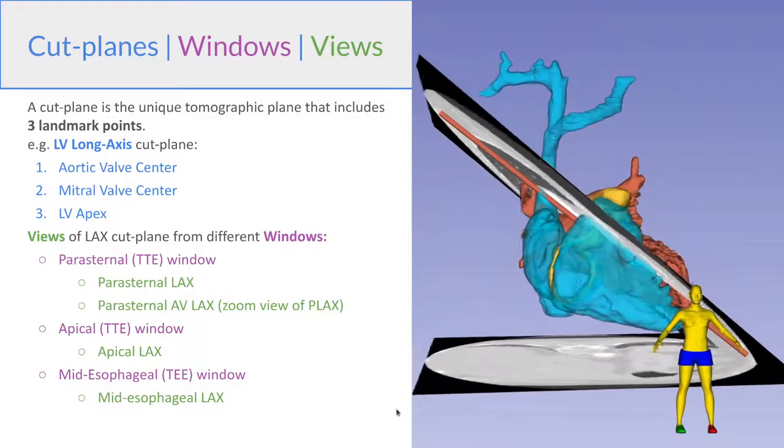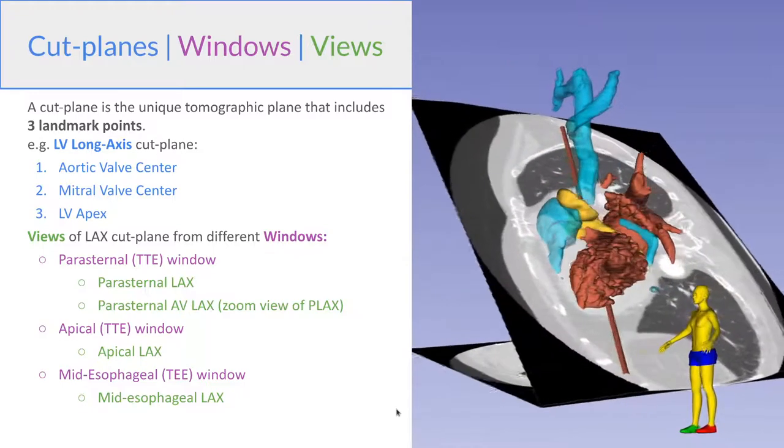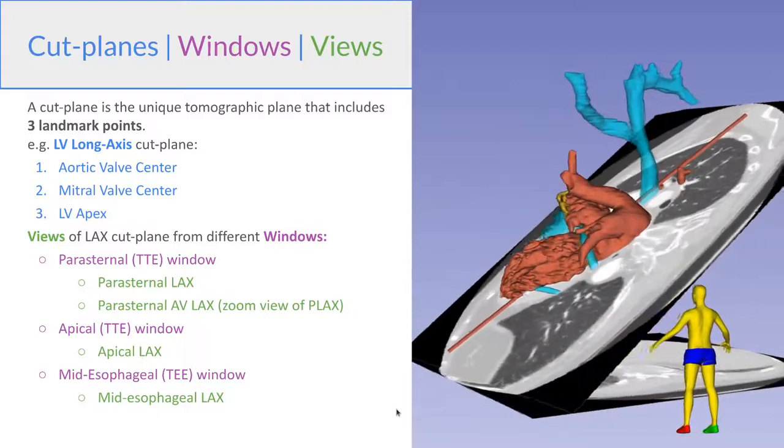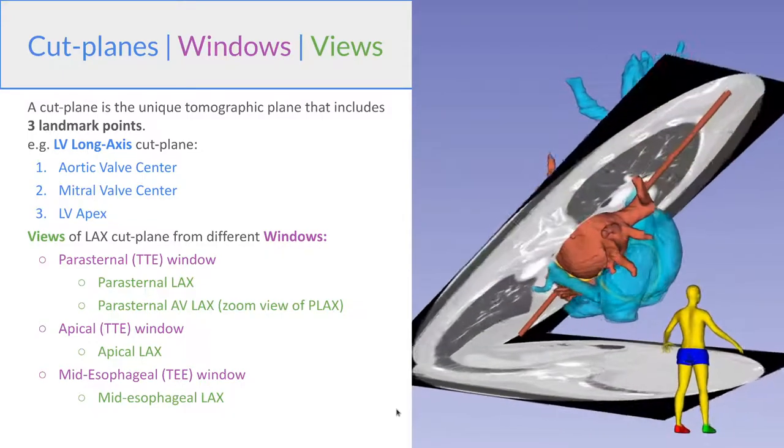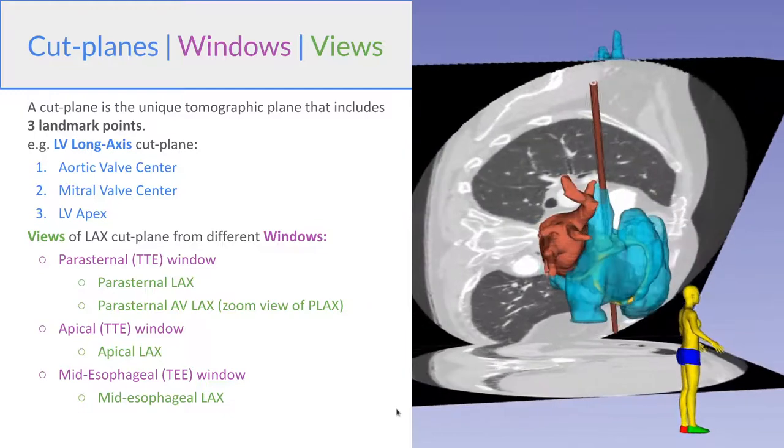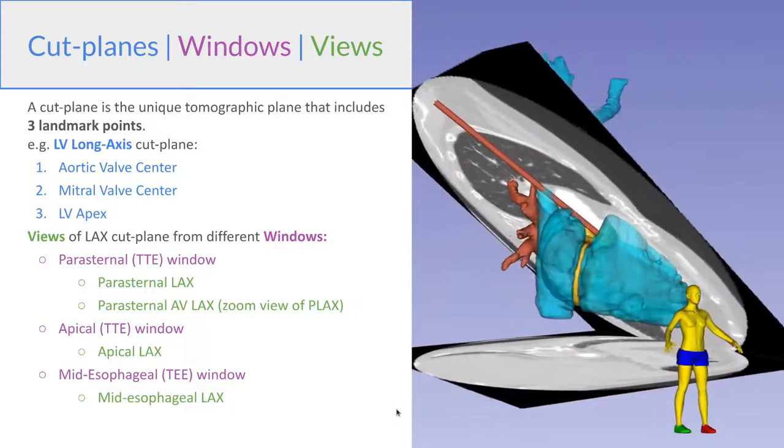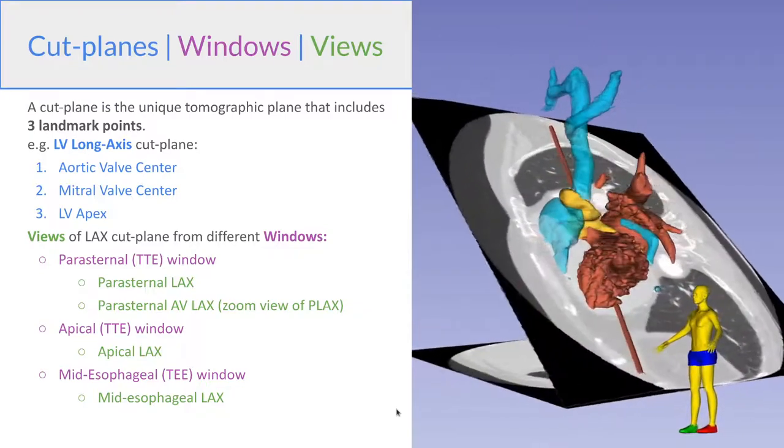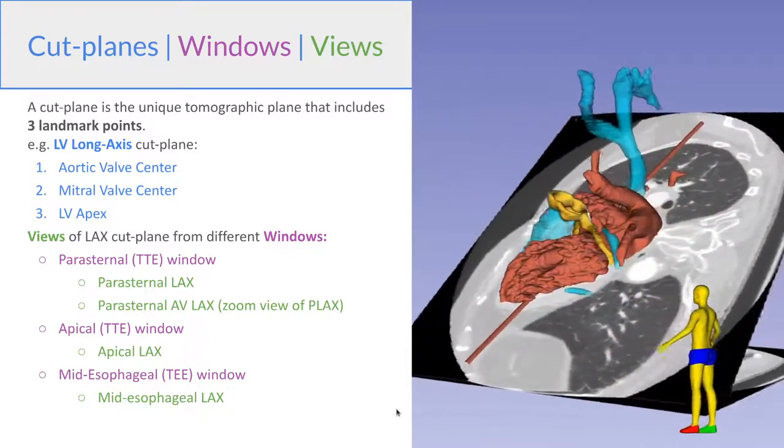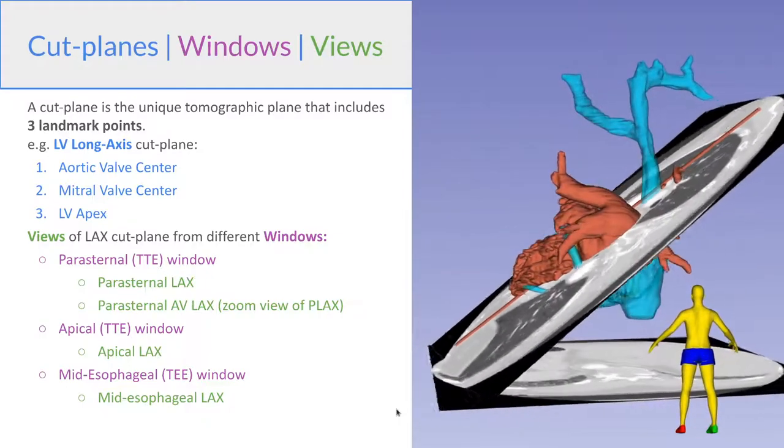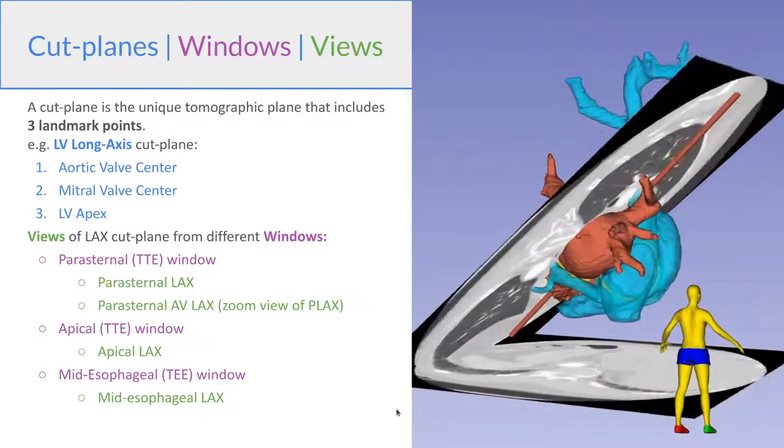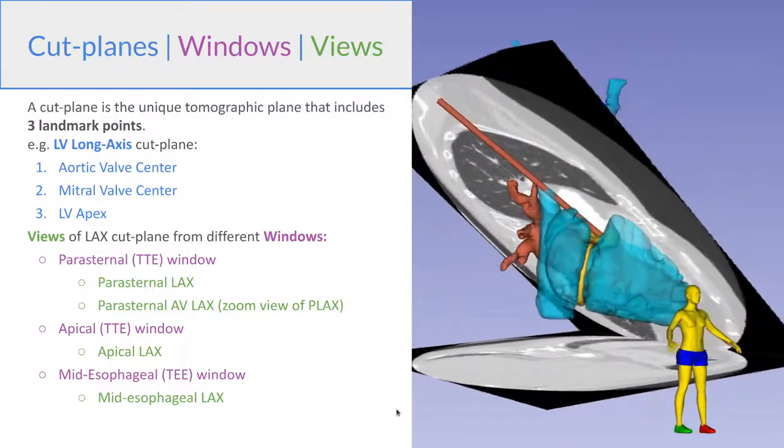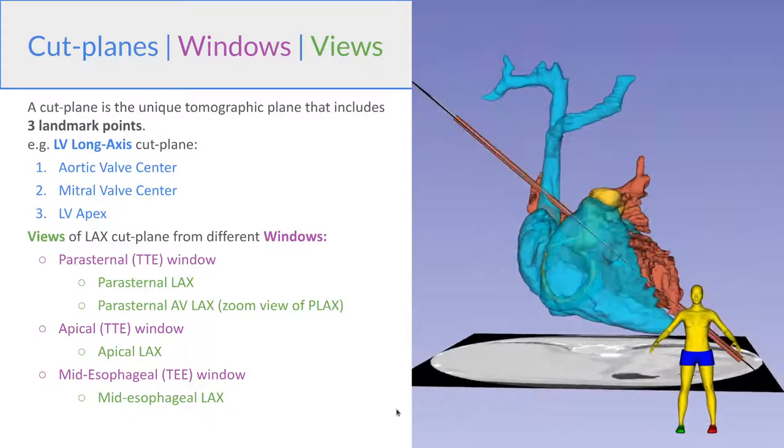So next we're going to look at cut planes, windows, and views. And the distinction here is pretty important. So cut planes are tomographic slices through the image. And these can be defined typically by three landmark points. For example, for the long axis view cut plane that is shown here, it can be defined by the center of the aortic valve, the center of the mitral valve, and the LV apex. And for a given cut plane, we have different windows that allow us to see parts of it, and we have different views from those windows.